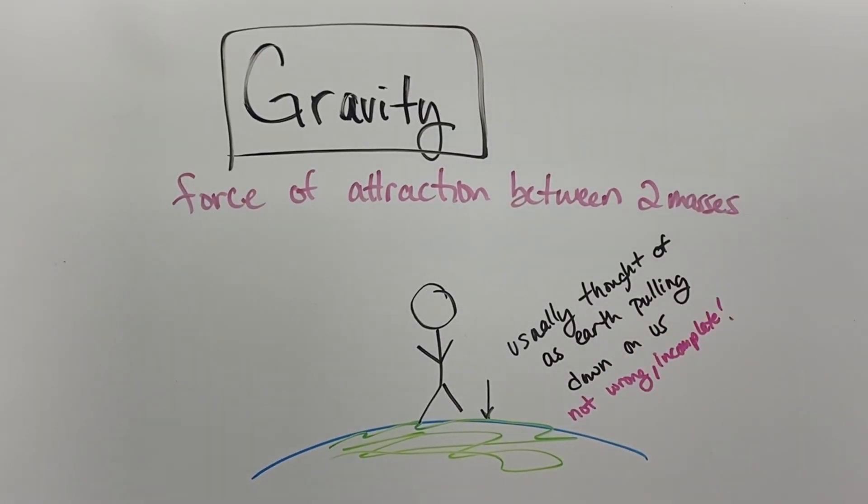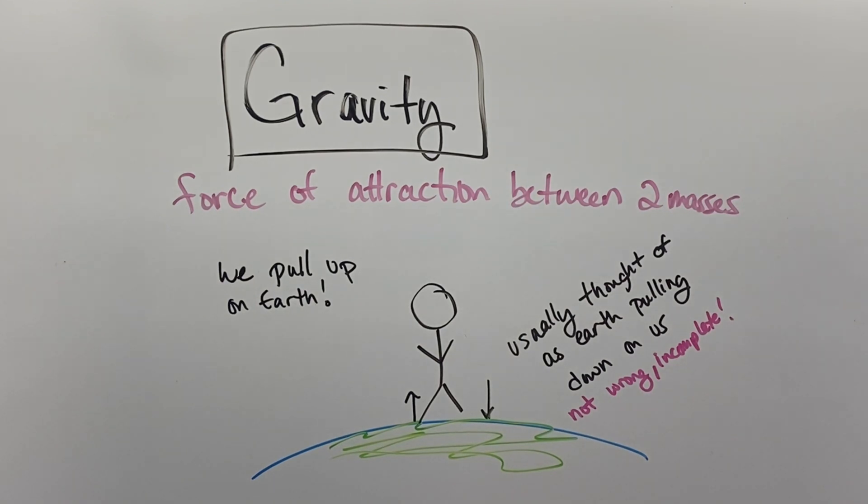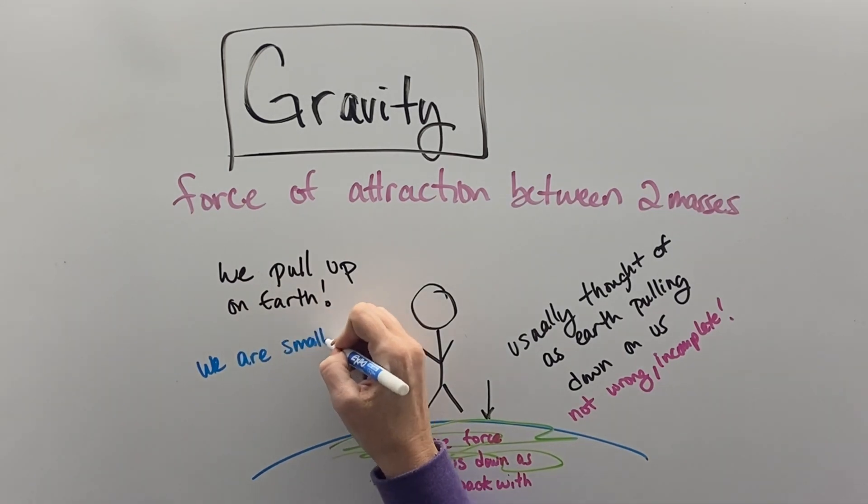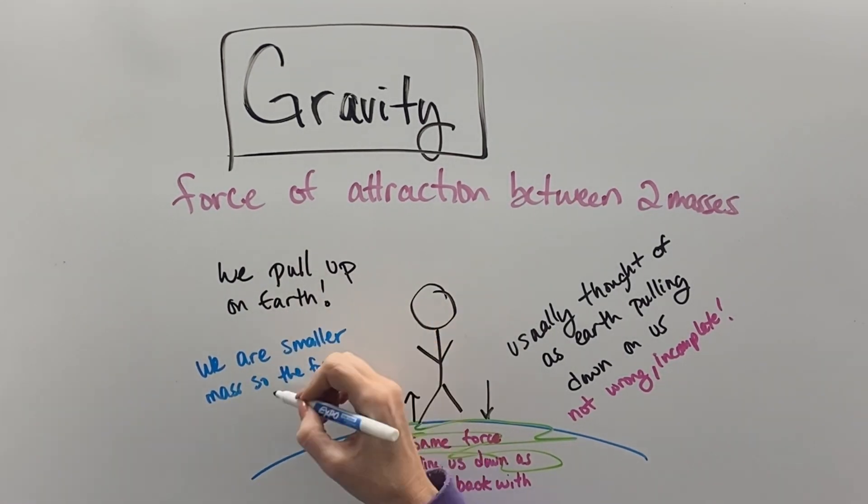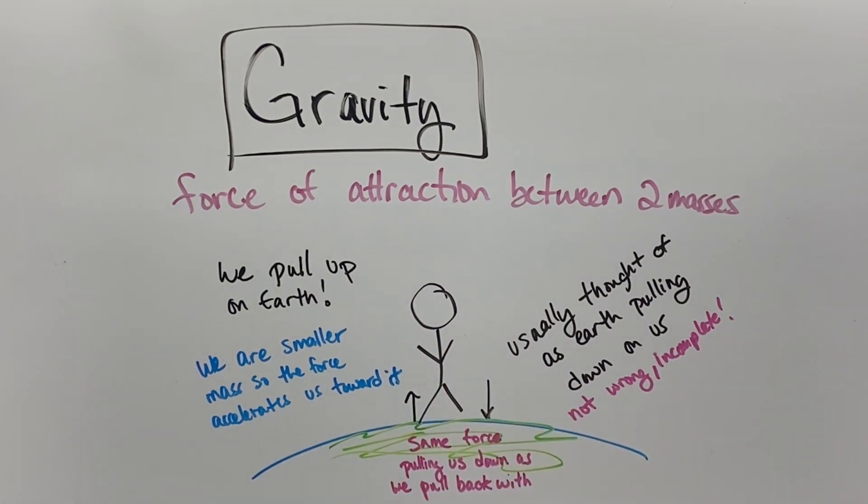And thinking of it this way is not wrong, it's just incomplete. The key is that, yes, the Earth does pull down on us, but we actually pull up on the Earth. The reason we fall, though, is because it's the same amount of force that the Earth pulls on us as we pull on the Earth, but the Earth is huge, and so the amount of force is enough to move our mass and accelerate us back towards the planet, but we don't have enough force to be able to pull the Earth towards us.